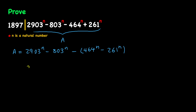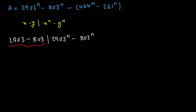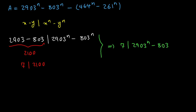Now we all know that x minus y divides x to the n minus y to the n. Therefore, I can use this property and say that 2903 minus 803 divides 2903 to the nth power minus 803 to the nth power. Notice that this is just 2100, and we know that 7 divides 2100. Therefore, 7 divides 2903 to the nth power minus 803 to the nth power.